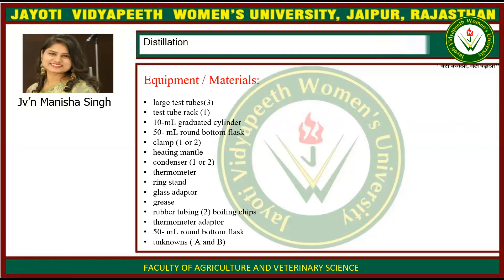Equipment and materials required: 3 large test tubes, 1 test tube rack, a 10 ml graduated cylinder, a 50 ml round bottom glass flask, 1 or 2 clamps, a heating mantle, 1 or 2 condensers, a thermometer, a ring stand, a glass adapter, grease, 2 rubber tubings, boiling chips, a thermometer adapter, and unknowns 1 and 2 (A or B) as the sample.